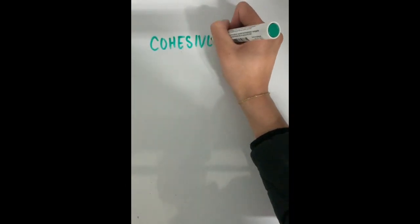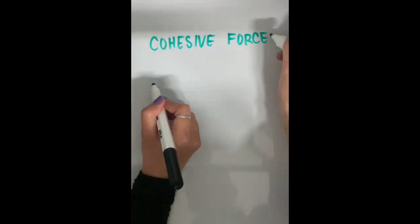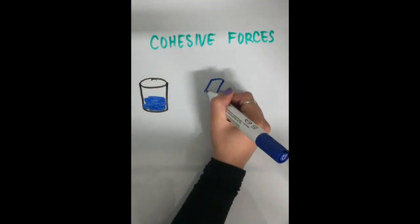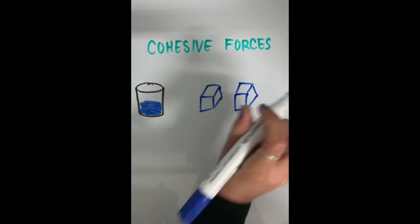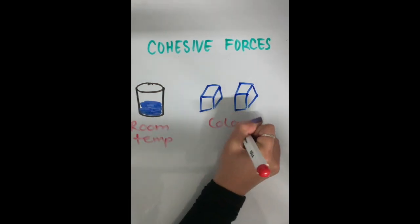Cohesive forces make water liquid at room temperature and ice solid at colder temperatures. The cohesive forces in ice help it to resist separation.